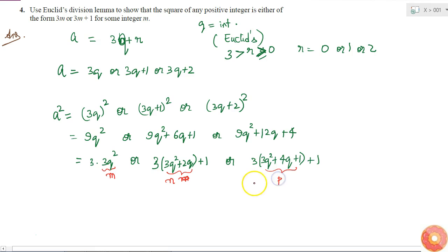I can write a² as 3M, or 3N + 1, or 3P + 1. If I want to generalize it, I can write a² as 3M or 3M + 1, where M is just an integer that can take different values depending upon the value of a.